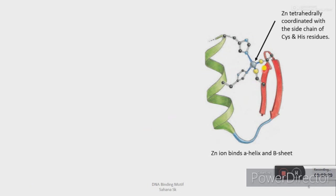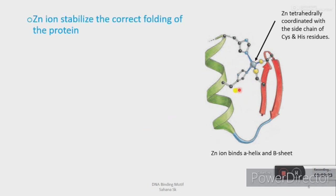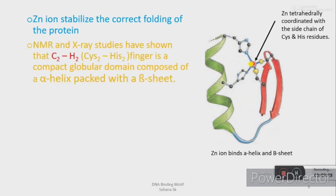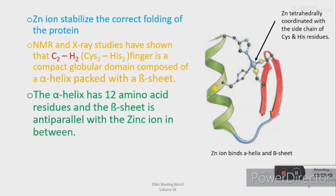The main function of the zinc ion in this motif is to stabilize the correct folding of the protein. Further detailed study of this motif using X-ray and NMR clearly showed that the C2H2 finger is a compact globular domain composed of an alpha helix and a beta sheet. The alpha helix has 12 amino acid residues, and the beta sheet is anti-parallel. Between these two secondary structures there is a zinc ion holding them together in correct folding.